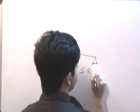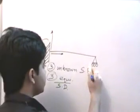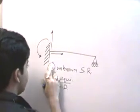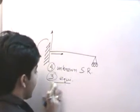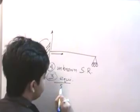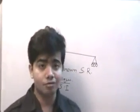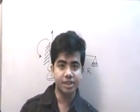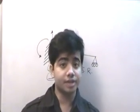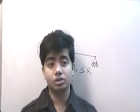Now if we introduce a roller support, the structure becomes a propped cantilever. Due to this roller support, we now have four unknown support restraints but only three equations of equilibrium, making it a statically indeterminate structure. To solve for the unknown forces in a statically indeterminate structure, we use compatibility equations and constitutive relations.